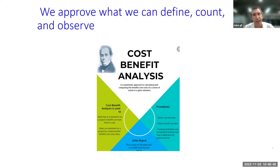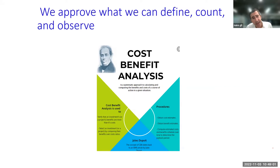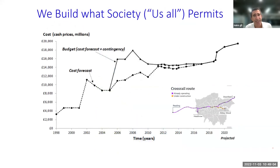I tend to tell my students, whether in executive education or undergraduates, that what we are approving these days tends to be what we can define and what we can observe. But what we approve is fundamentally different from what we actually build. There's no way, at least in open-access societies and liberal economies, that we'll be able to build exactly what we approve.